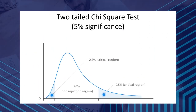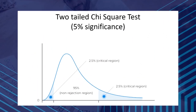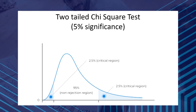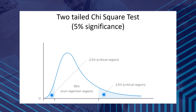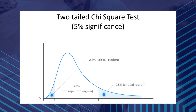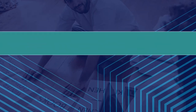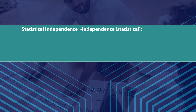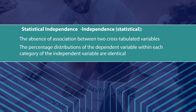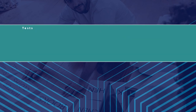For a two-tailed Chi-square test with 5% significance, the critical region of 5% is divided into two 2.5% critical regions at both ends, with a 95% non-rejection region. Statistical independence is the absence of association between two cross-tabulated variables — the percentage distribution of the dependent variable within each category of the independent variable is identical.